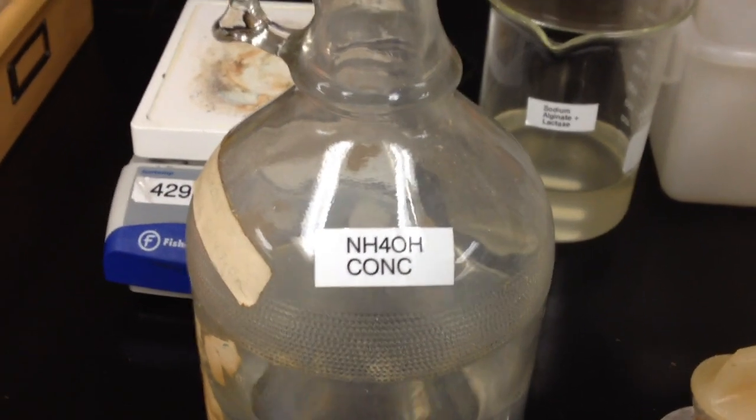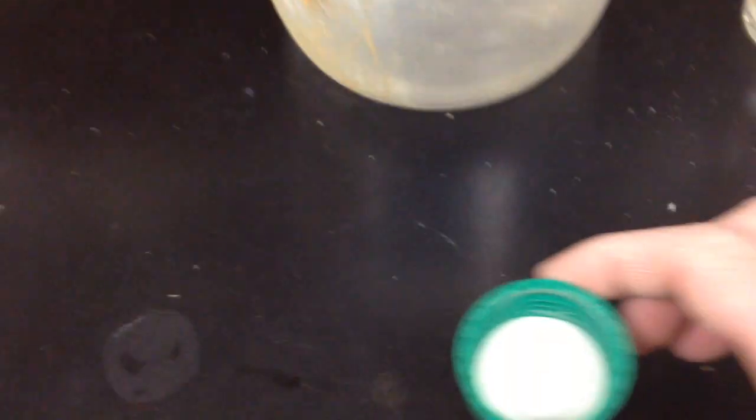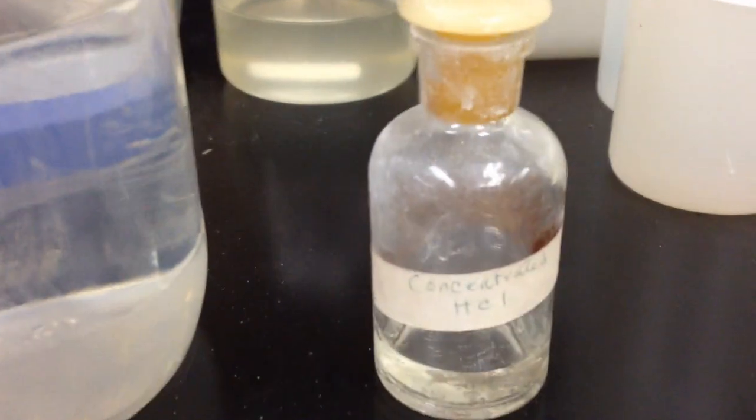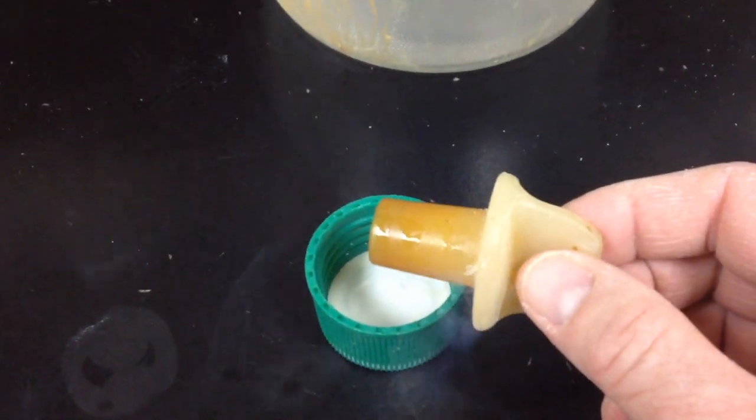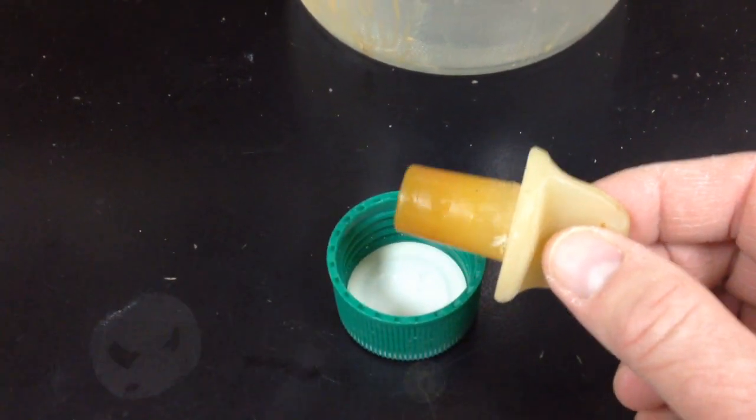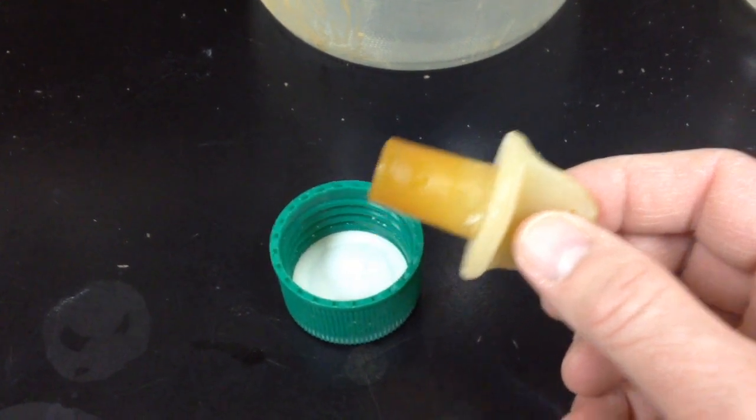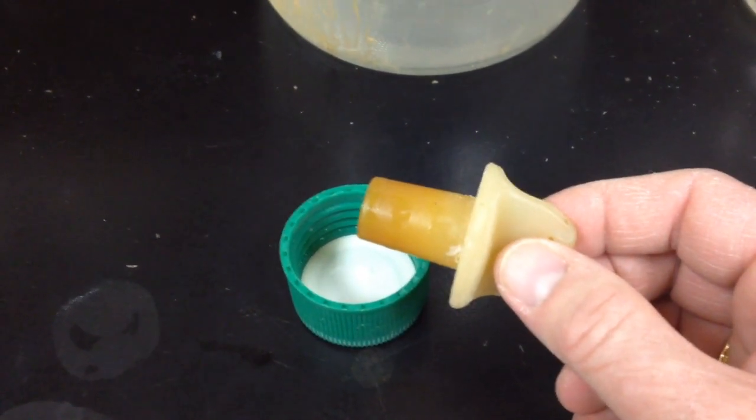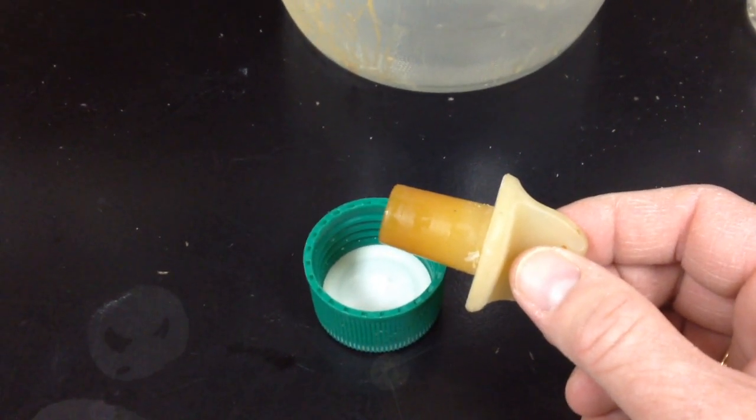So if I take the lid from the ammonium hydroxide, which is ammonia and water, pop that there, and then take the lid from the concentrated hydrochloric acid. I put those together. Oh, that's kind of freaky. Now there's no water involved in this reaction. It's the ammonia gas from the green lid and the hydrogen chloride gas from this reacting together to make solid ammonium chloride. There's no water, so it can't be an Arrhenius acid-base reaction.